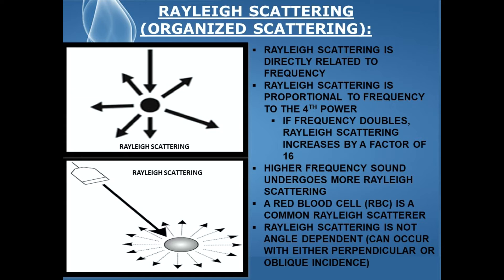Just for review: perpendicular incidence is when a sound wave approaches a boundary at exactly 90 degrees, and oblique incidence is when a sound wave approaches a boundary at any angle other than 90 degrees.